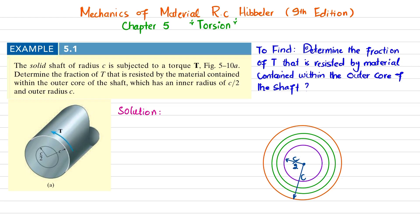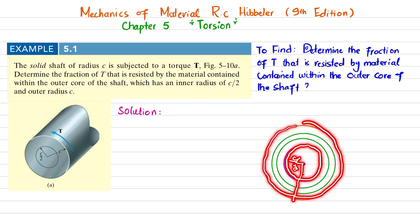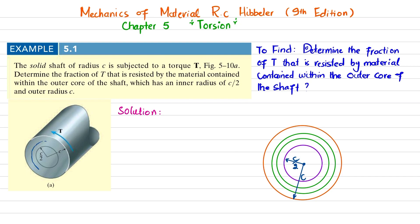For the solution, I have taken the outer core having radius c and the inner core having inner radius c/2. I take a small differential circular section — shown here in green — which is at a distance ρ from the center point. The thickness of this circular cross-section is dρ.